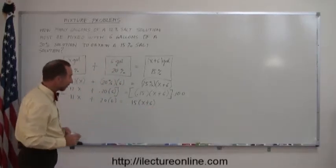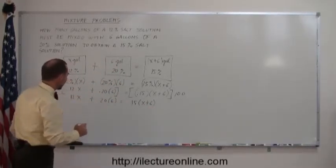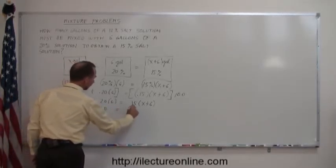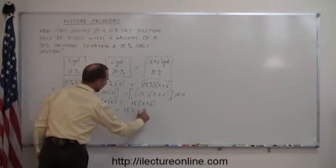The next step is to get rid of the parentheses. We have parentheses here and there, so we multiply these out. We get 12X plus 120 equals 15X plus 90.